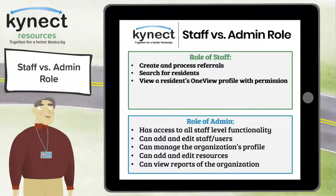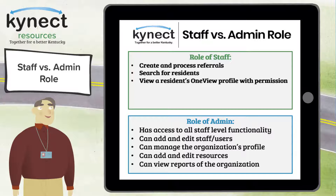There are two community partner access levels: staff and admin. The staff role can create and process referrals, search for residents, and view a resident's OneView profile if they have permission. The admin role has access to all staff level functionality as well as adding and editing users, managing the organization's profile, adding and editing resources, and viewing reports.